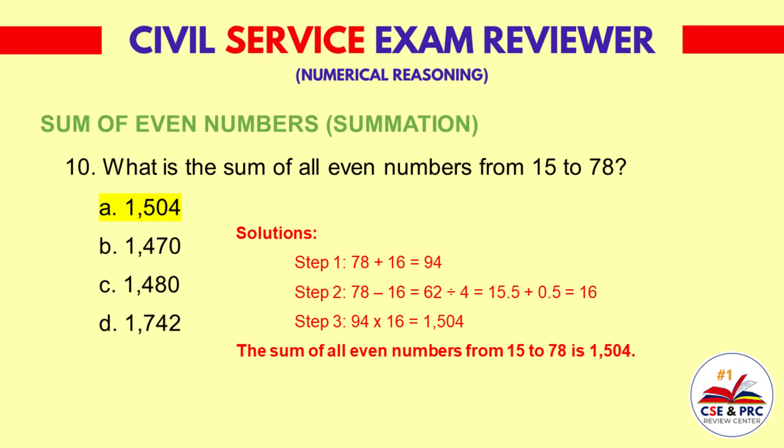Solutions — Step 1: 78 plus 16 is equal to 94. Step 2: 78 minus 16 is equal to 62, divided by 4 is equal to 15.5, plus 0.5 is equal to 16. Step 3: 94 times 16 is equal to 1,504. The sum of all even numbers from 15 to 78 is 1,504.